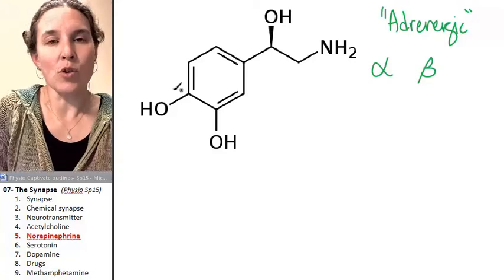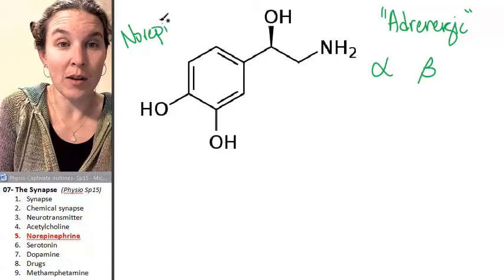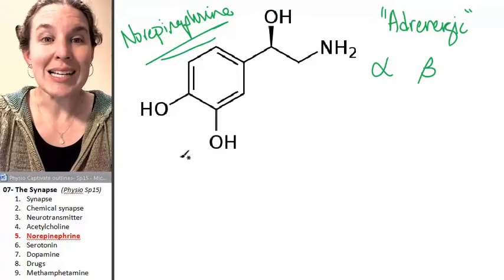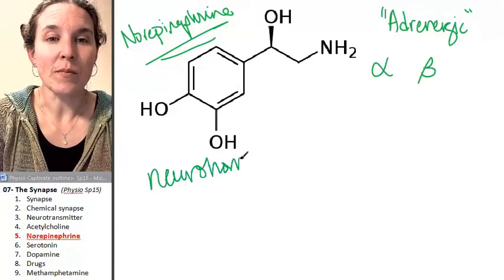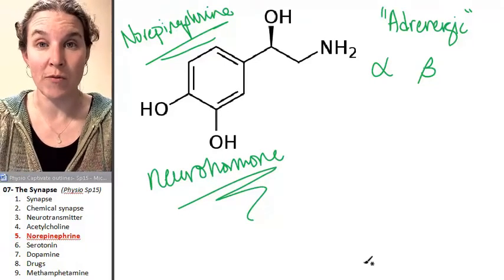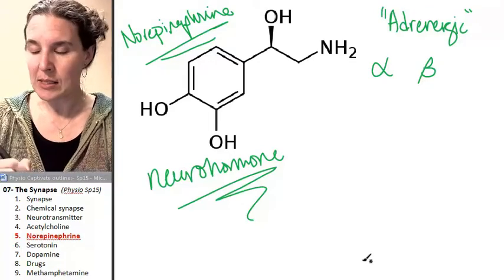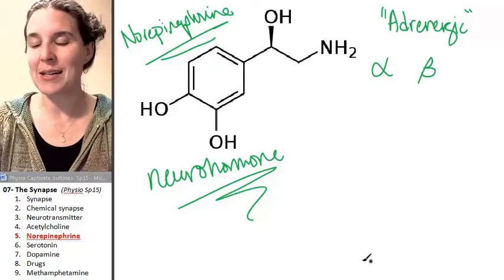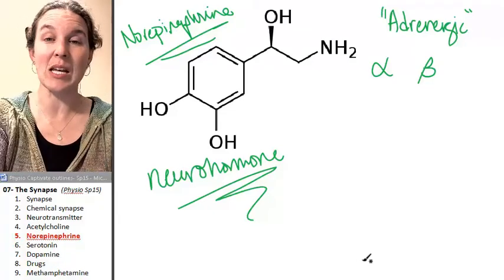Norepinephrine is an example of a neurohormone, because there's a very specific place where we literally dump norepinephrine into the blood — we'll talk about that more in detail. It's part of the fight-or-flight response, part of the sympathetic nervous response. Usually it gets everything ramped up, but sometimes it inhibits things in the brain.